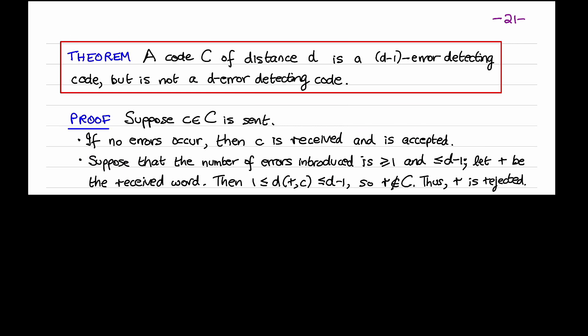To prove the first claim, suppose the codeword C is transmitted. If no errors occur during transmission, then C is received and is therefore accepted, since our channel decoder accepts all codewords. Suppose now that the number of errors introduced during transmission is at least 1 and at most D-1. Let R be the received word. Then the distance between R and C is at least 1 and at most D-1. Thus R is not a codeword, because the distance between any two distinct codewords is at least D. So our channel decoder will reject R — that's a correct decision. This proves that the code is a D-1 error-detecting code.